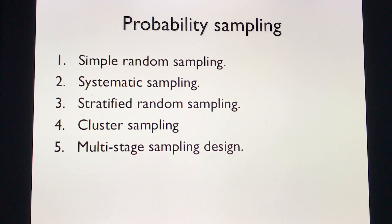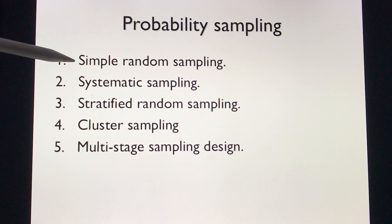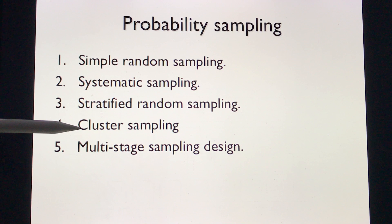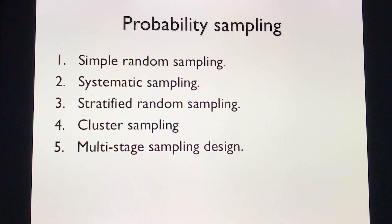Here is an additional overview of probability sampling types: simple random sampling, systematic sampling, stratified random sampling, cluster sampling, and multi-stage sampling design.